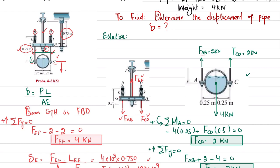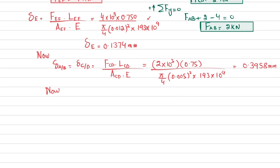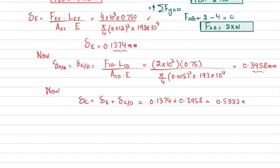The displacement of point C equals the displacement of point E plus the elongation of rod CD (displacement of C relative to D). So δ_C = δ_E + δ_CD = 0.1374 + 0.3958 = 0.5332 millimeter.